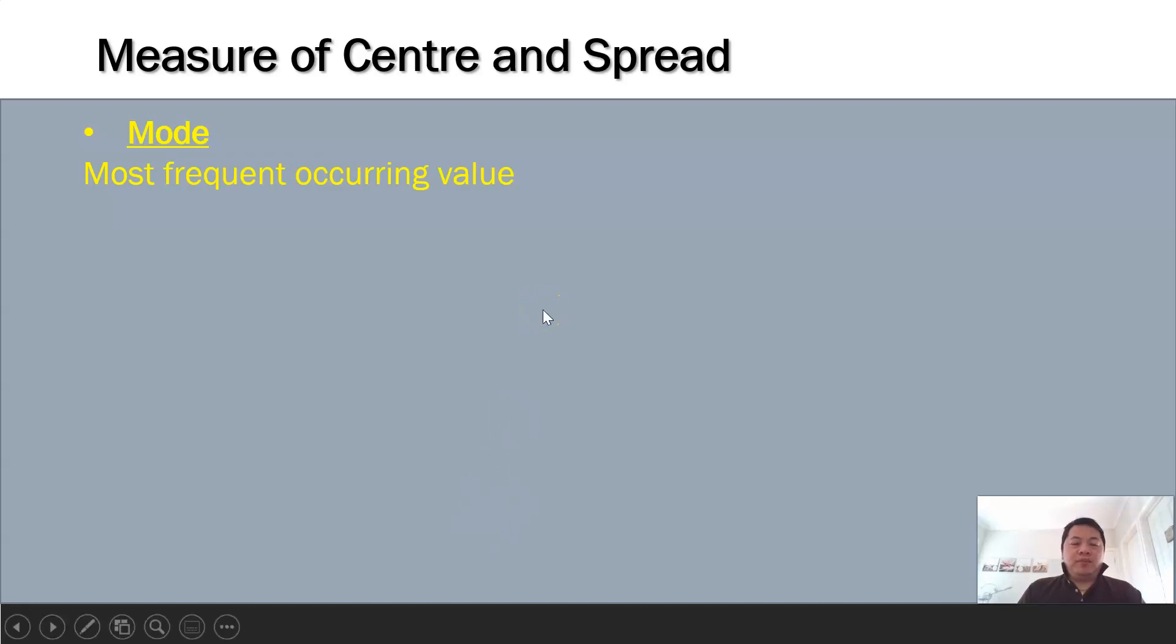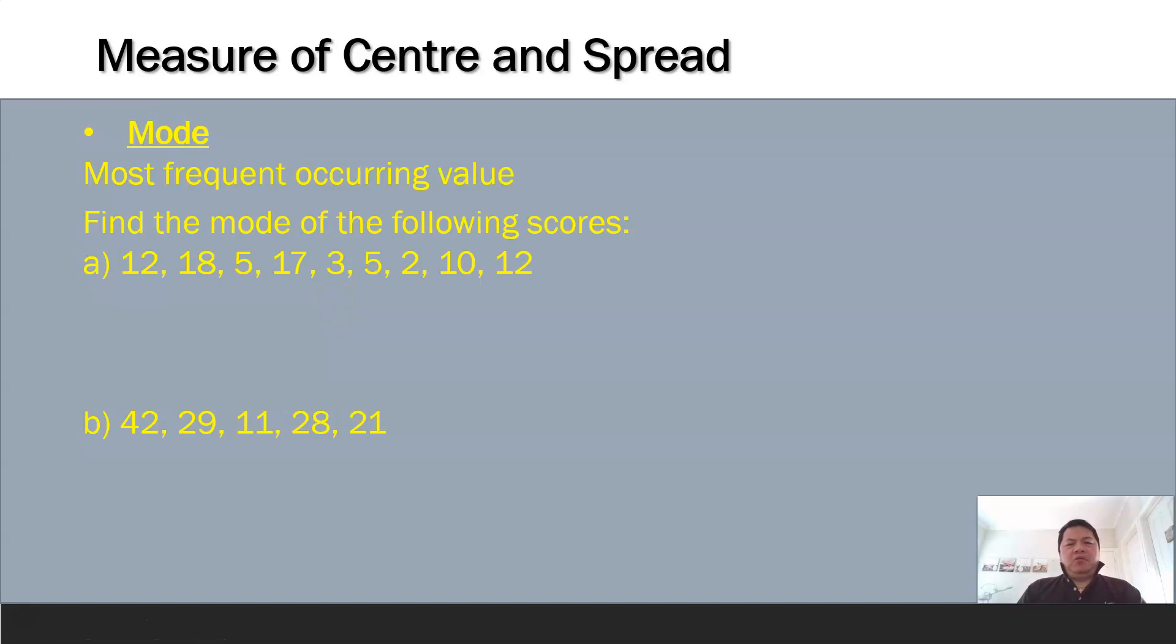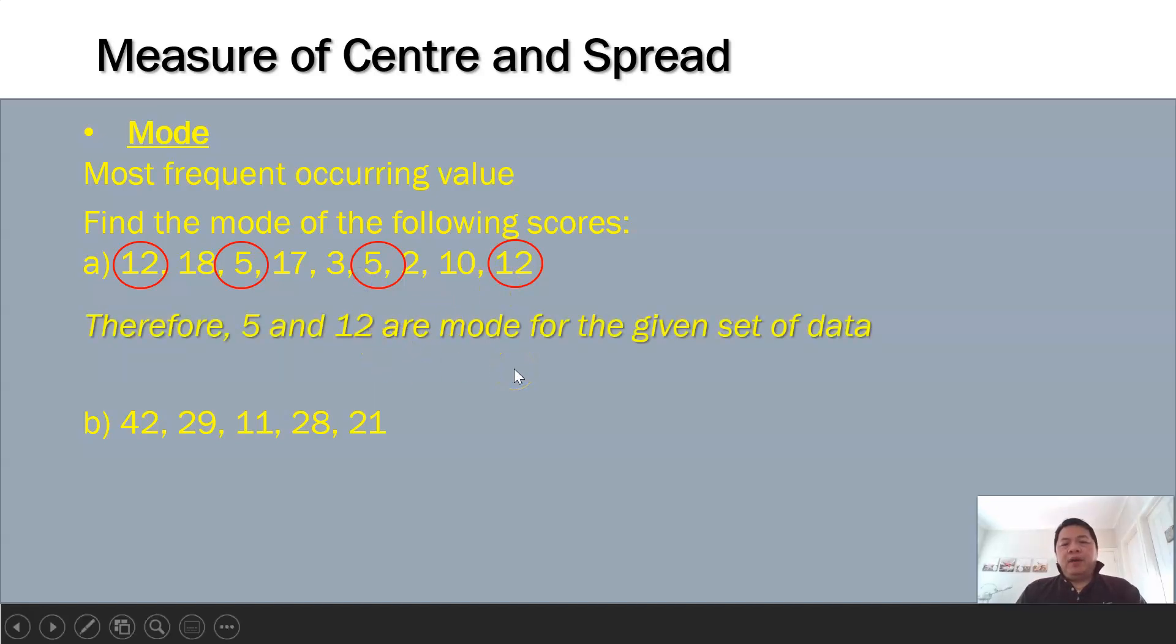Now you're given a set here to find which one occurs most often. For the first one, 12 appears twice, 5 appears twice. I have 5 and 12 that appear twice, the rest all appear once. For this case you can have two modes: 5 and 12 are the mode of the given set of data. What about the following set? Everything appears just once. When such things happen, take note that it simply means there's no mode in the given set of data because there's nothing that is very common. You must have at least two or three times appearing.